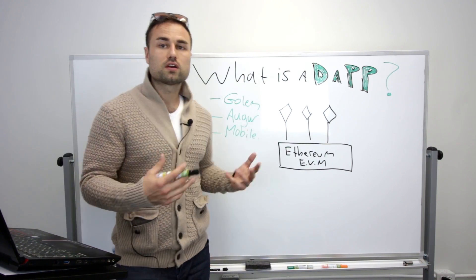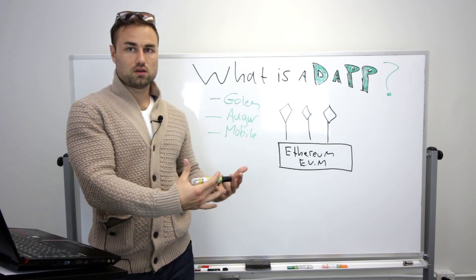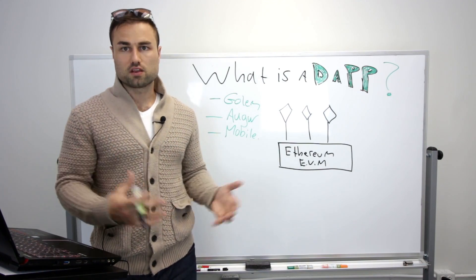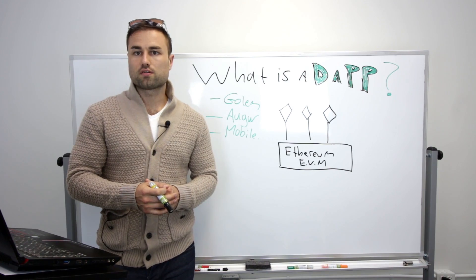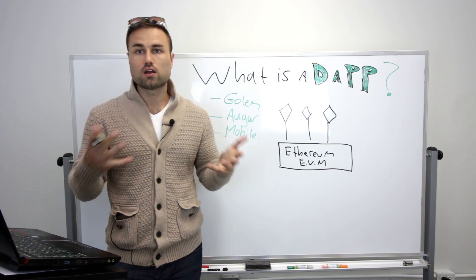So how it works is if you and I want to create a company, we will build our token. We will build our startup on top of Ethereum. We would use Ethereum's protocols, Ethereum's smart contracts, Ethereum's network, and build a brand new token on top of it.